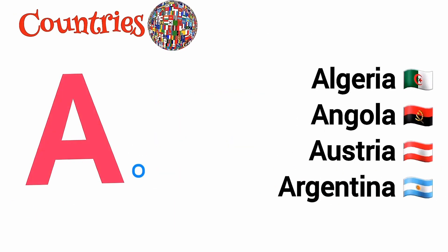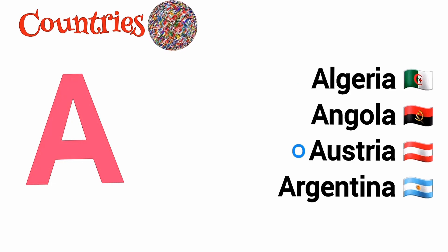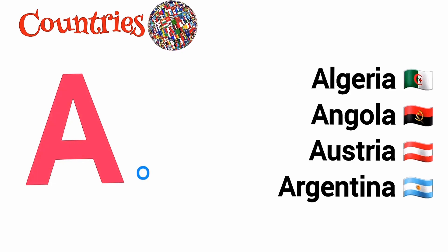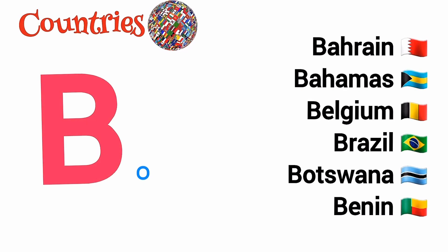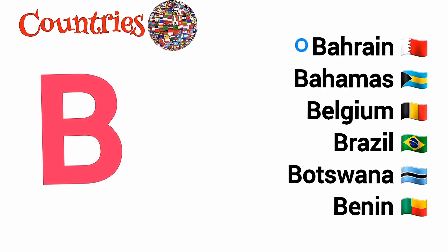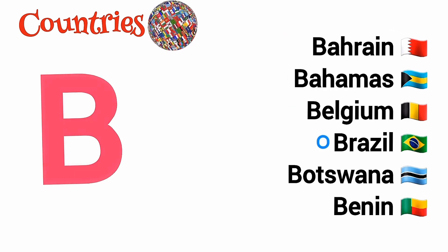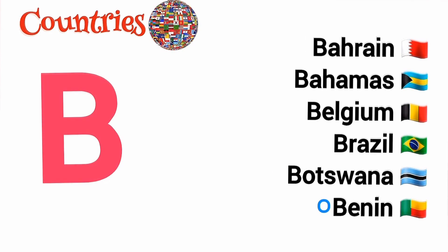A is for Algeria, Angola, Austria, Argentina. B is for Bahrain, Bahamas, Belgium, Brazil, Botswana, Benin.